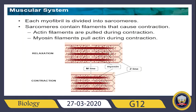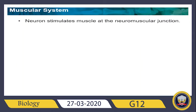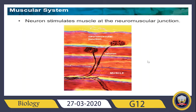The neuron stimulates muscles because before a muscle can contract it must receive a stimulus. The nervous system is responsible for causing contractions and movement. The neuron stimulates the muscle at the neuromuscular junction — this is the point where the neuron meets the muscle.